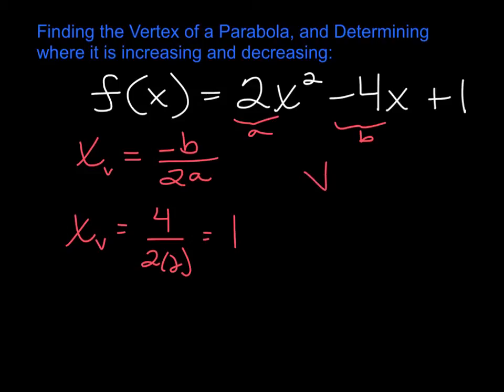So right now we know my vertex is 1 comma something, and we just have to figure out that other something.